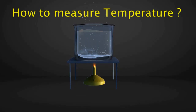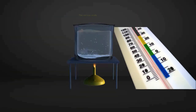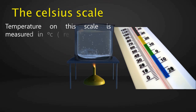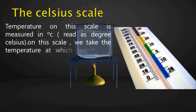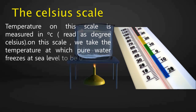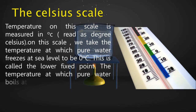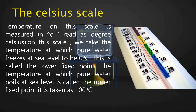How to measure temperature? We can use either the Celsius or the Fahrenheit scale. On the Celsius scale, temperature is measured in degrees Celsius. The temperature at which pure water freezes at sea level is 0 degrees Celsius — this is the lower fixed point. The temperature at which pure water boils at sea level is 100 degrees Celsius — this is the upper fixed point. We specify sea level because the freezing and boiling points of water change at higher altitudes.